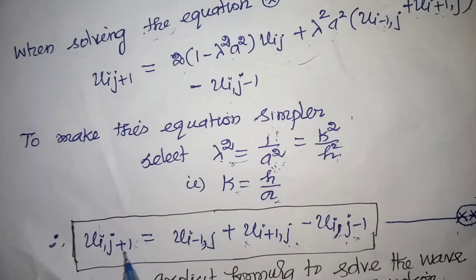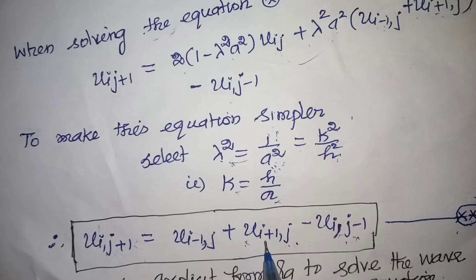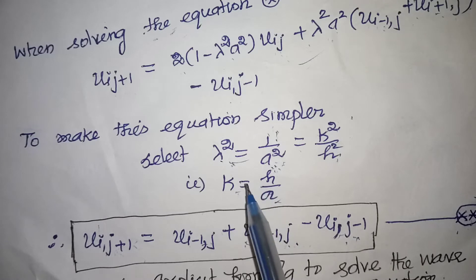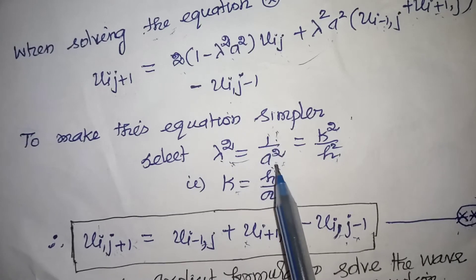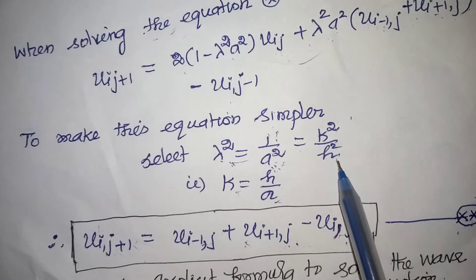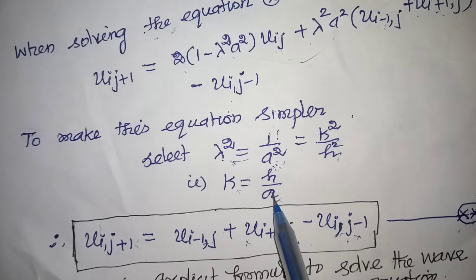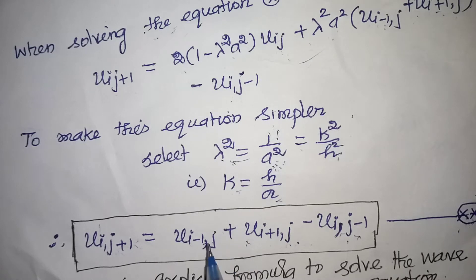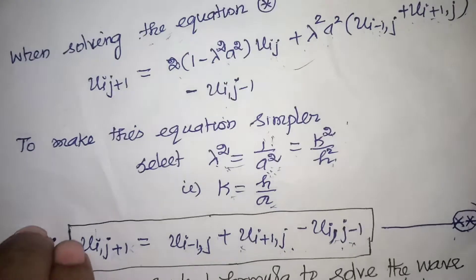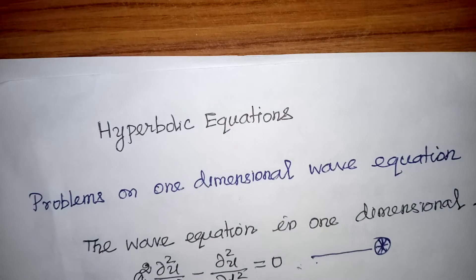Substituting λ = 1/a², the explicit formula becomes: u(i, j+1) = u(i−1, j) + u(i+1, j) − u(i, j−1). Here λ² = k²/h², giving k = h/a. This is called the explicit formula to solve the wave equation.